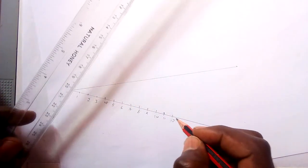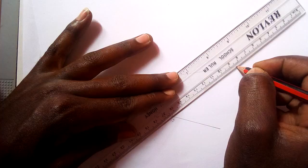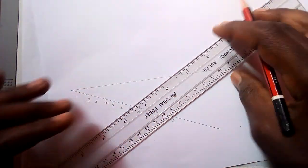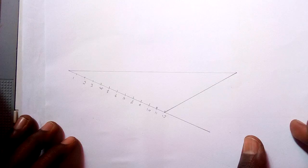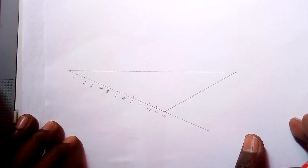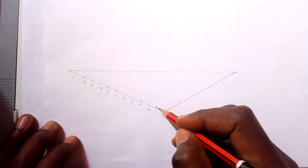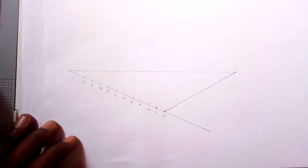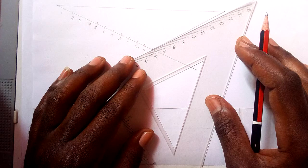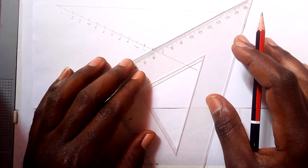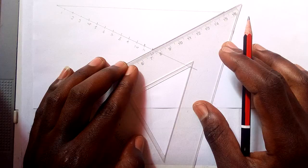Now join this point. If you don't know how to divide a line, you can check in the description. There are some videos that show how to divide a line into any number of equal parts. We're going to draw lines parallel to this that will attach all these points.